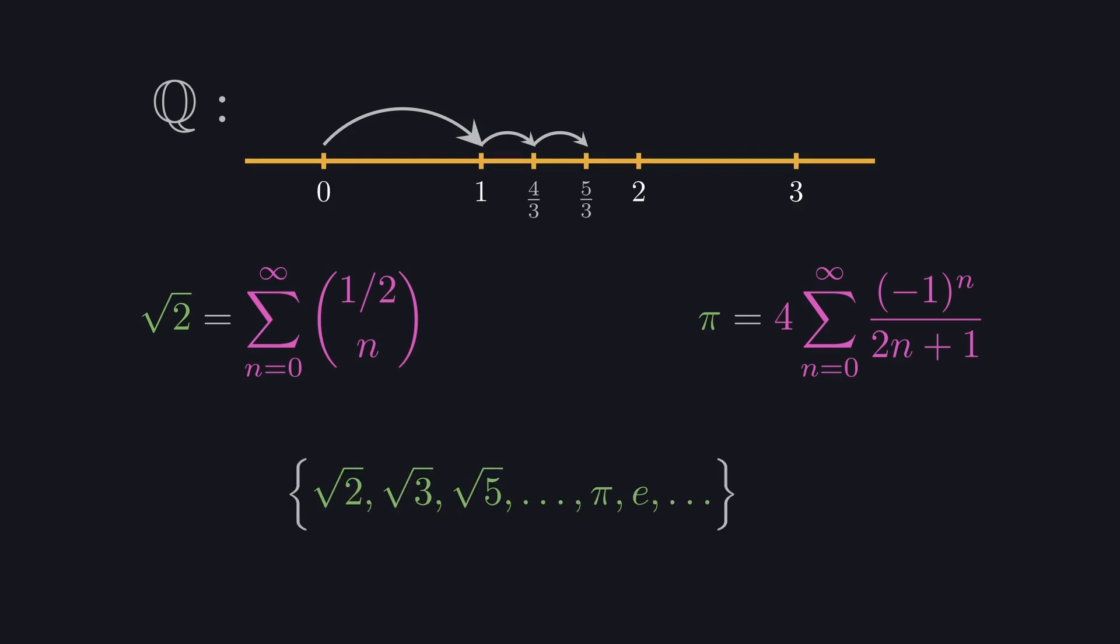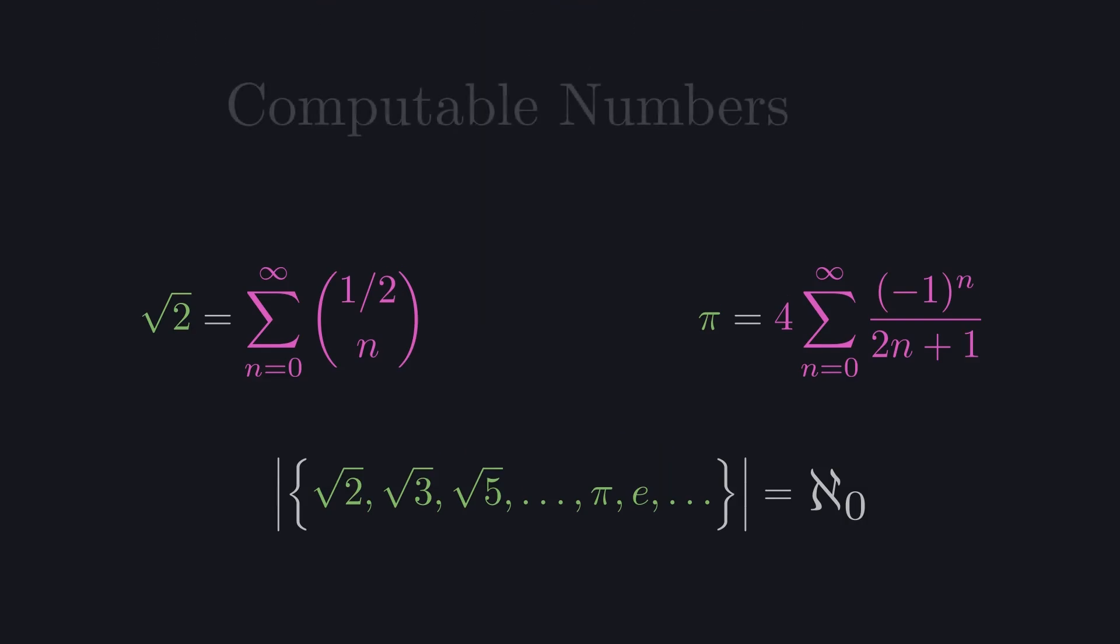The set of numbers that can be defined as a countably infinite process is itself countable. Note that this isn't a complete set of irrational numbers. It's a set of only those we can compute this way. Computable numbers. We'll assign a blackboard capital K to them.